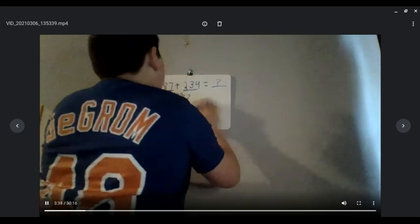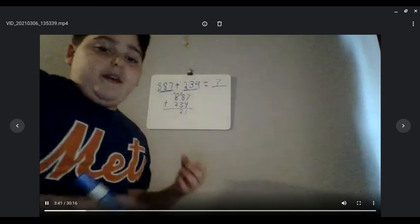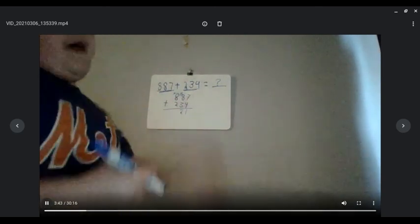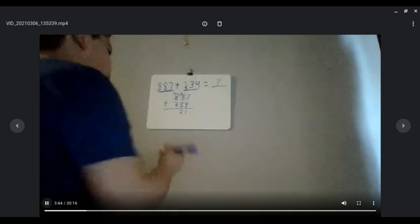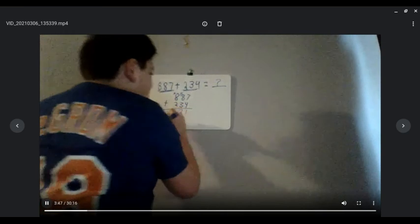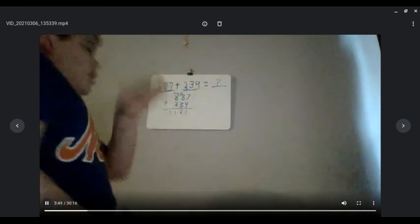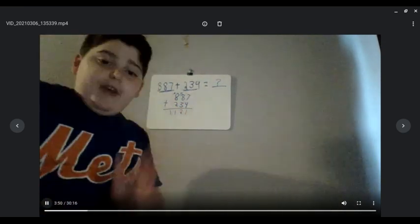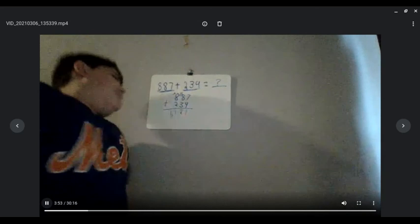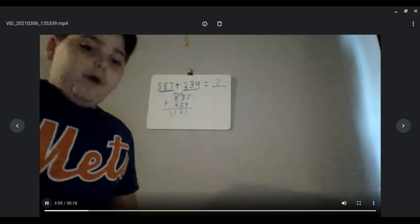And then you're going to add 8 plus 2, which is 10. And then remember to add that 1, which will bring 11 again. So then you put 11 — since there are no more digits, you can just put the 11 down there. And then that will give us 1,121.